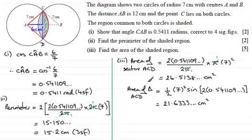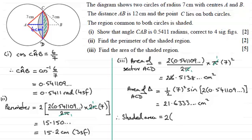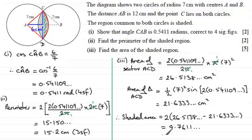Subtracting the triangle area from the sector area gives the segment area. Doubling that gives the total shaded area: 2 × (26.5138... − 21.6333...) = 9.7611..., which rounds to 9.76 centimetres squared to three significant figures.